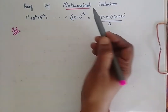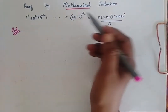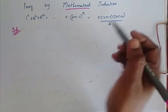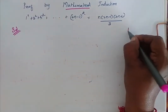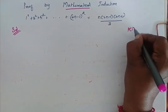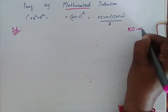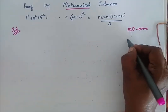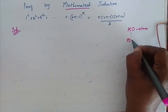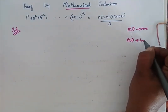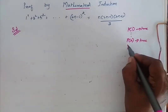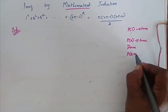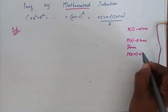Proof by mathematical induction. Whenever I say that I am going to prove by mathematical induction, I should show that my P of 1 is true. Since my P of 1 is true, I assume that my P of K is true. Then I have to prove that my P of K plus 1 is true.